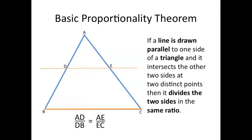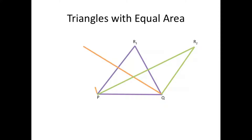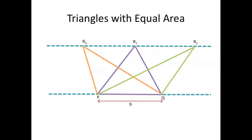To understand this proof, we need to understand triangles with equal area. We have a triangle with base PQ, and from this base we draw two other triangles, also with base PQ. All three triangles share the same base, and if you draw out parallel lines, you can see that they also share the same height. In such a situation, all three triangles share the same area. Whenever triangles share the same base and lie between parallel lines, you can say they have equal area.